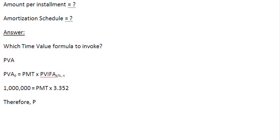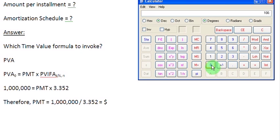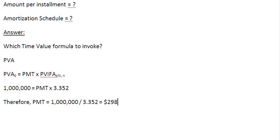So the payment is equal to 1,000,000 divided by 3.352. Checking on the calculator: 1,000,000 ÷ 3.352 gives us 298,329. We are going to ignore the cents for calculational ease, so the payment amount is $298,329. This is the amount we need to pay each year, and we need to continue paying this for five years in order to completely amortize our loan.